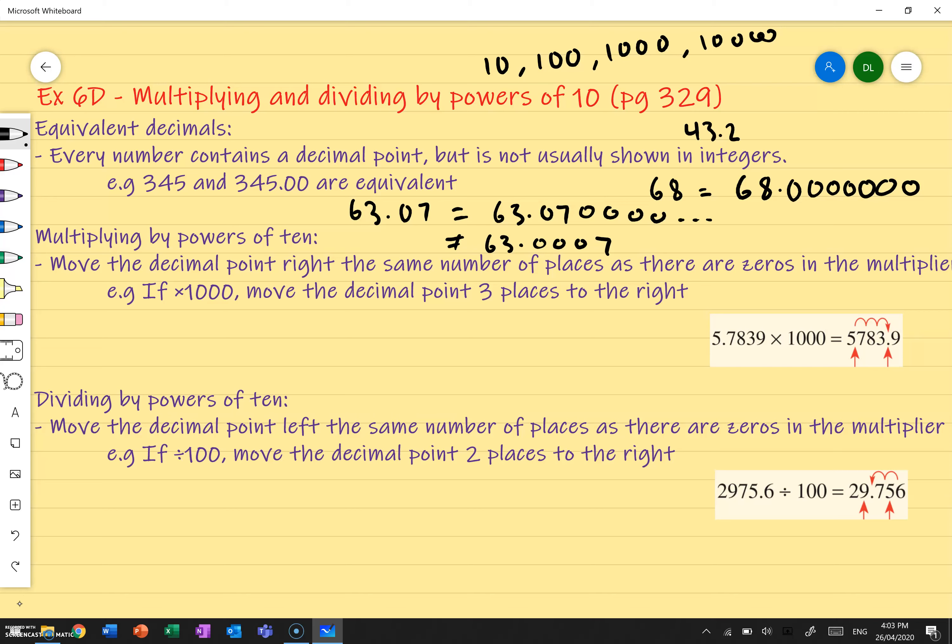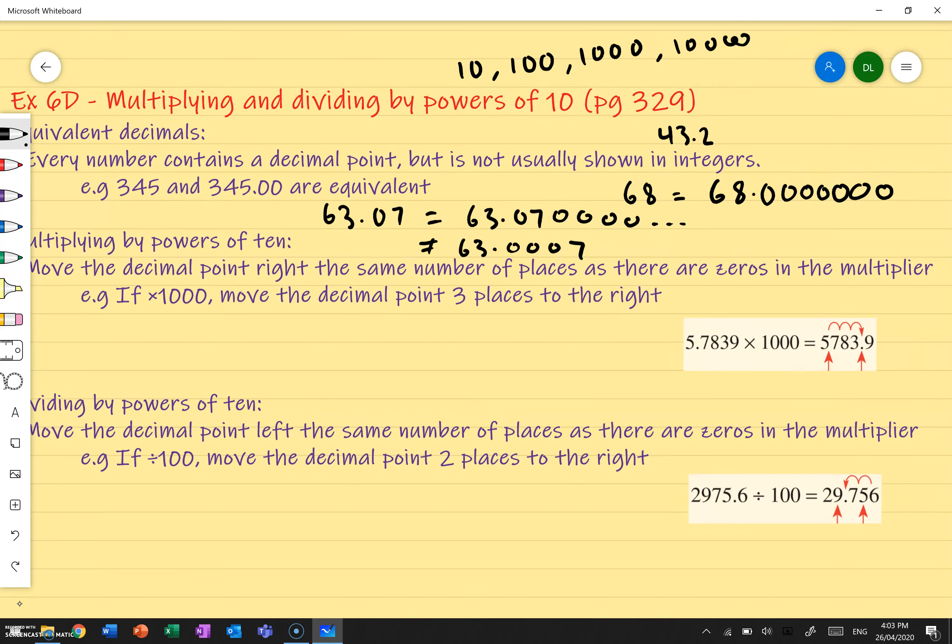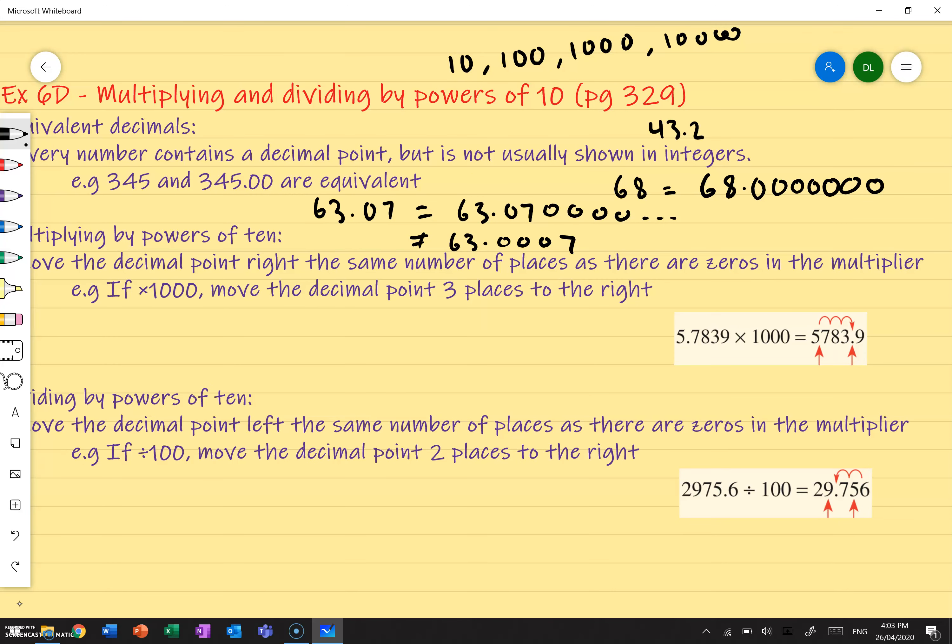So multiplying by powers of 10, all I have to do is move the decimal point right, towards the right, the same number of places as there are zeros in the multiplier. So what does that mean? For example, if I'm multiplying by a thousand, how many zeros are there in a thousand? There's one, two, three. That means I move the decimal point three places to the right. So if I've got 5.7839, all I have to do, if I'm multiplying by 1000, I'm moving the decimal point from here, one, two, three. And so it should be between the three and the nine, and I end up with 5,783.9. So that's the idea.